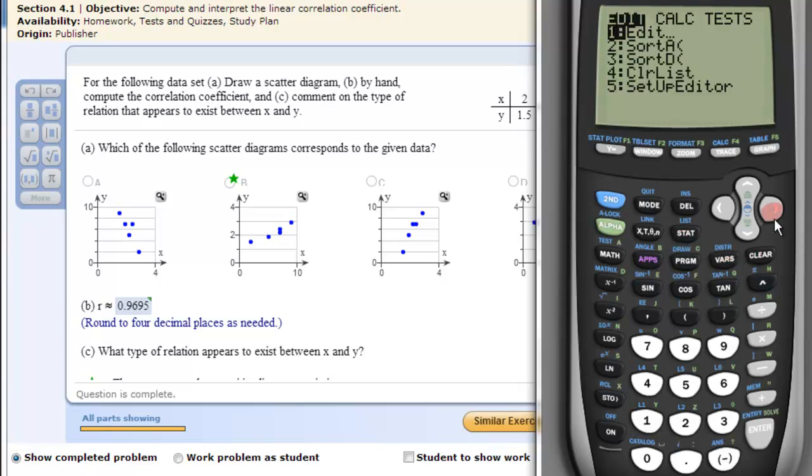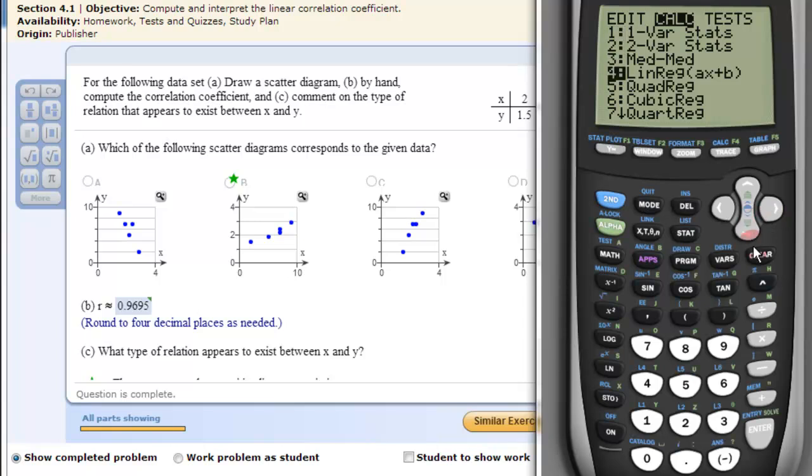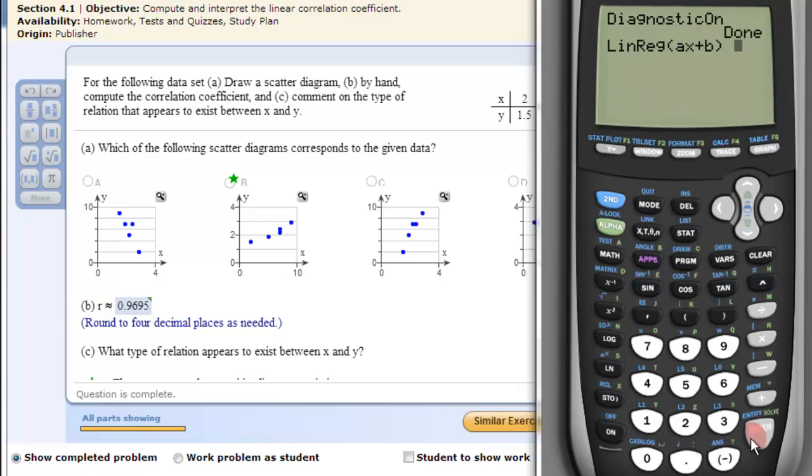Then you click stat, highlight calc, go down to number 4, hit enter, and hit enter again.